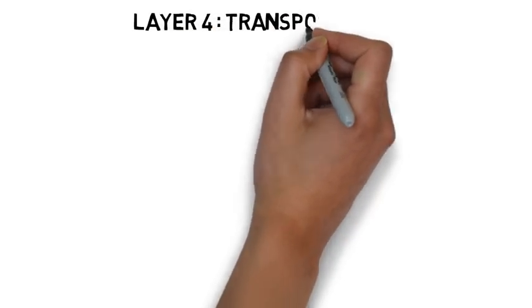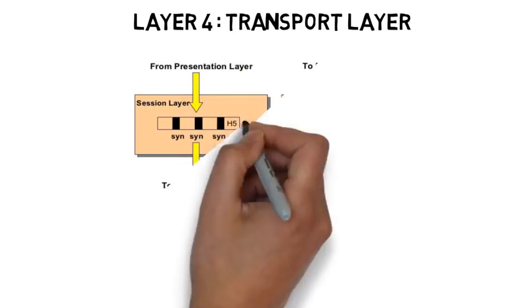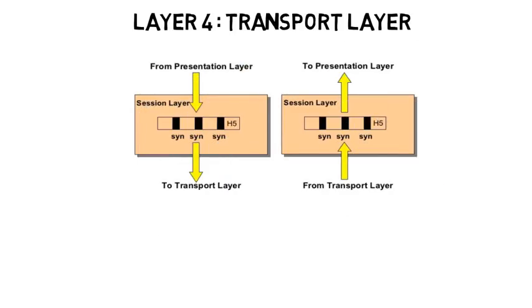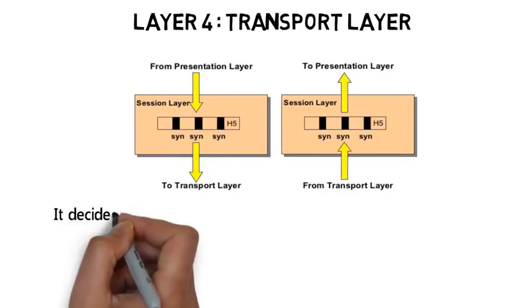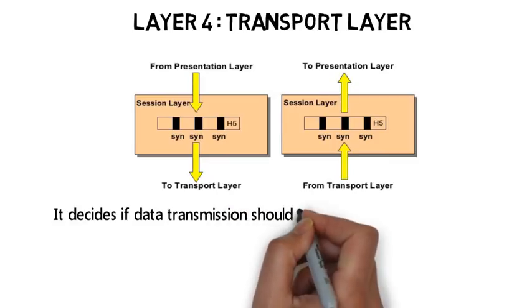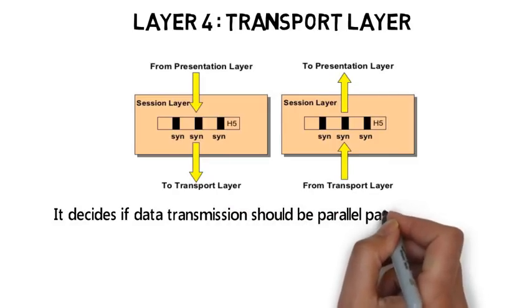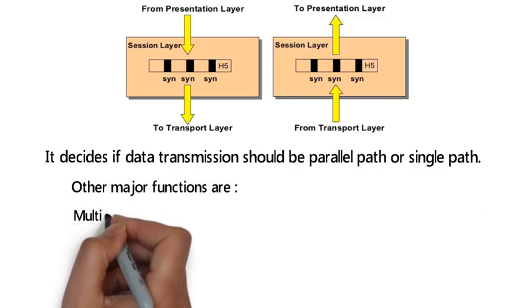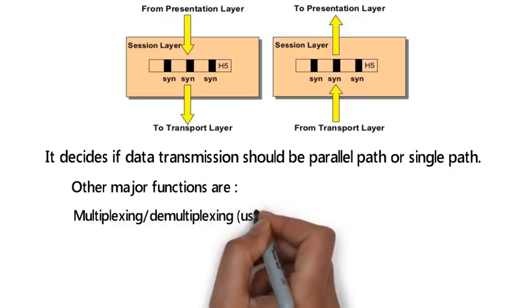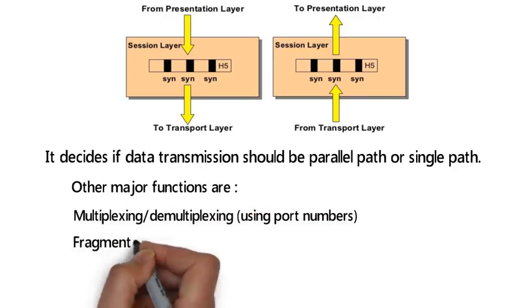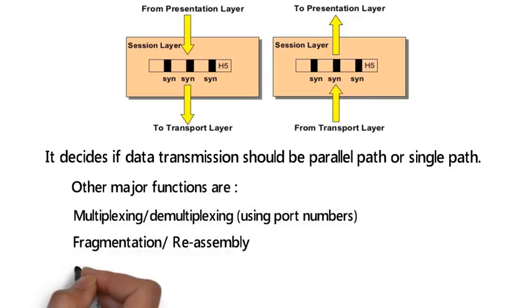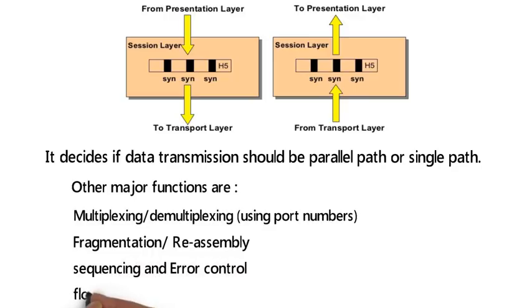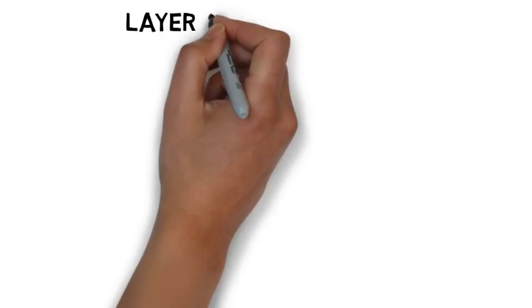Layer 4 is the Transport Layer. This layer decides if data transmission should be on a parallel path or a single path. Other major functions include multiplexing and demultiplexing information using port number, fragmentation, reassembling, sequencing, error control, and flow control.